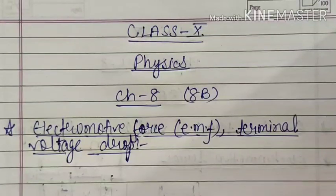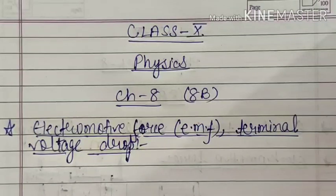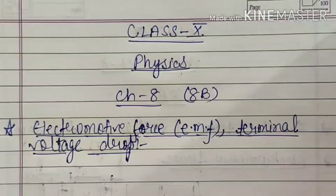Good morning students, it's Chandekala here and today we will start the second section of Chapter 8 on current electricity. In the first section we studied some common concepts related to an electric circuit: charge, current, and potential. We also learnt that if we want a continuous flow of current, our device must work continuously, and we need a cell or battery to maintain a constant potential difference.